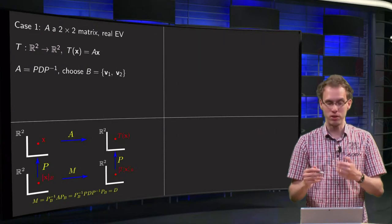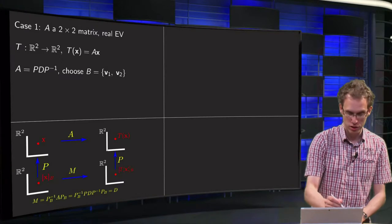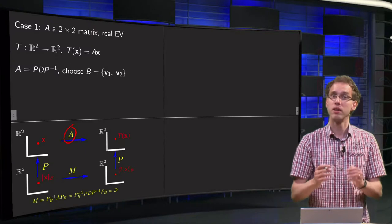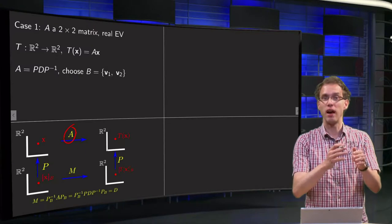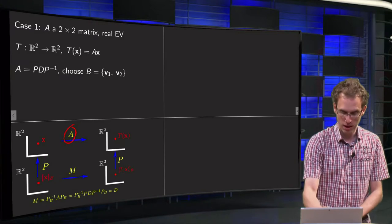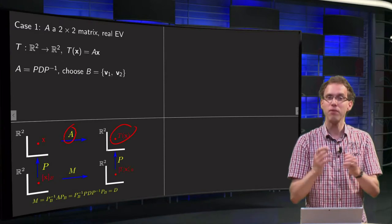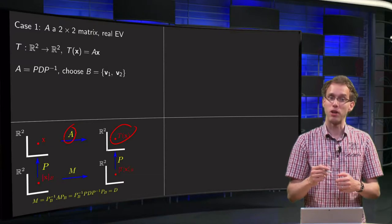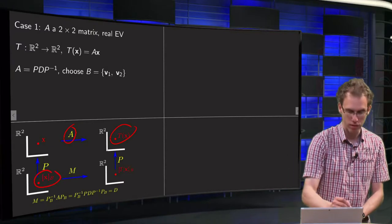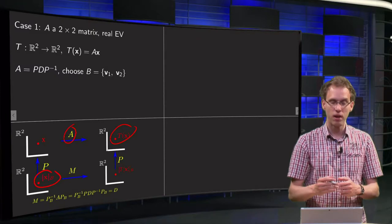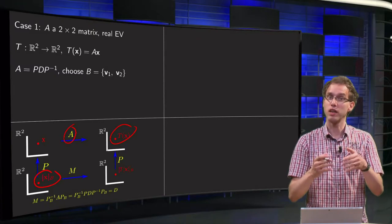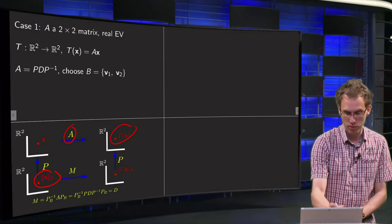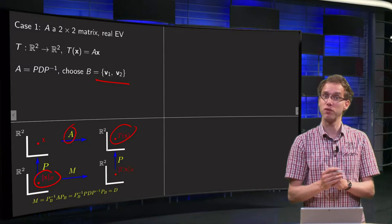So we know how to do this. The upper part is just our mapping T implemented by A. We start with x and our matrix A gives Ax, which will be the image of x. Then we look at this mapping with respect to the other basis. Our x_B is related to x by x equals P_B times x_B, where P_B is formed from the two basis vectors v₁ and v₂.